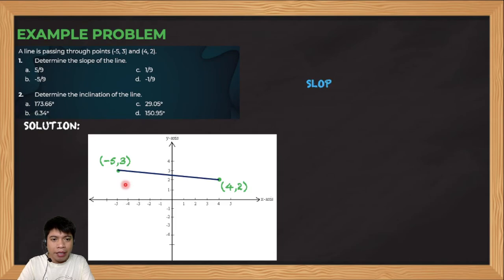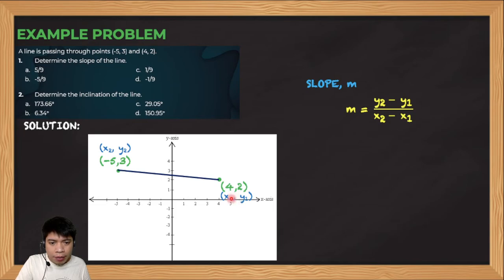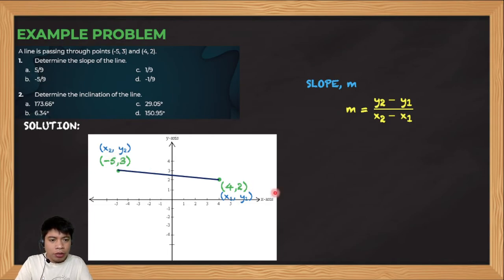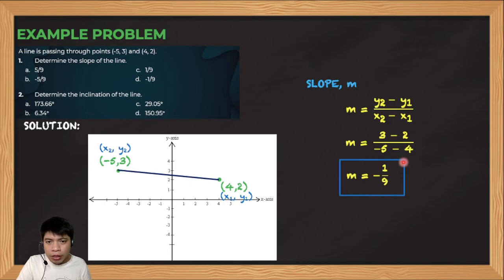The slope M equals y2 minus y1 divided by x2 minus x1. Let me assign 4, 2 as point 1, so x1 is 4 and y1 is 2. And let me assign negative 5, 3 as point 2, so x2 is negative 5 and y2 is 3. Substituting these values: 3 minus 2 divided by negative 5 minus 4, the slope will be negative 1 over 9. Looking at the choices, the answer is letter D, which is negative 1 over 9.